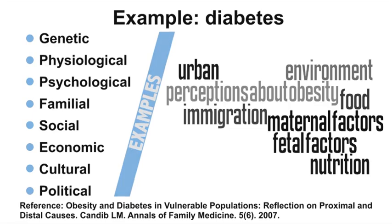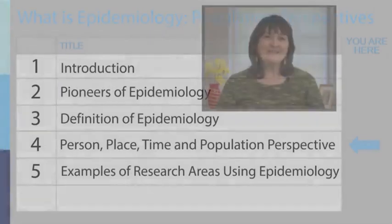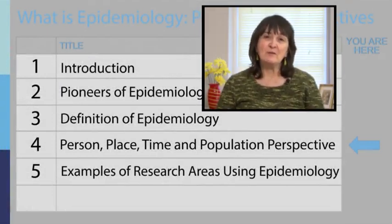To summarize what we have learned about the population perspective, we will compare it to the mission of public health. The population perspective focuses on describing patterns, identifying underlying causes of health problems, and developing interventions at the population level. In contrast, the mission of public health is to provide conditions that promote health, develop interventions or programs at the community level, and to make sure laws and mass media promote health. This concludes our lecture on the population perspective of epidemiology.